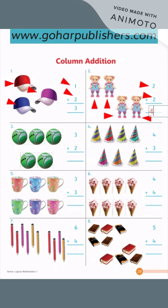Next, Question No. 3, which we will add in the form of Column — balls. So the question here is 3 plus 2 is equal. We will count: 1, 2, 3, 4, and 5. So 3 plus 2 is equal to 5.